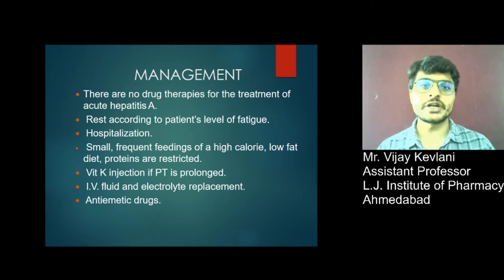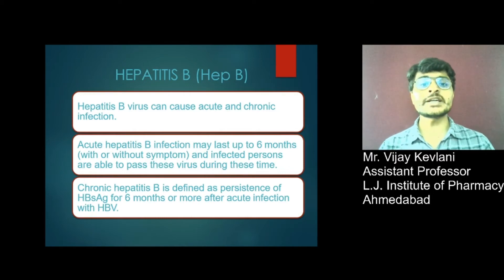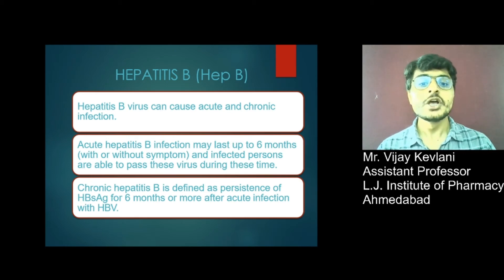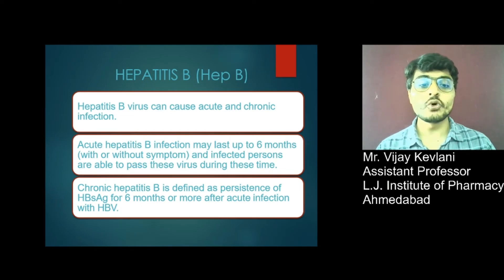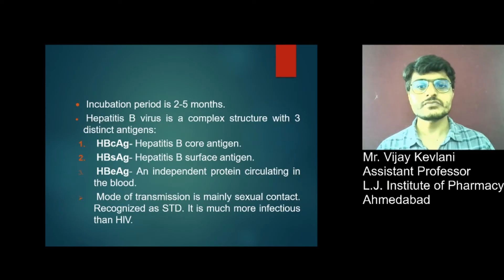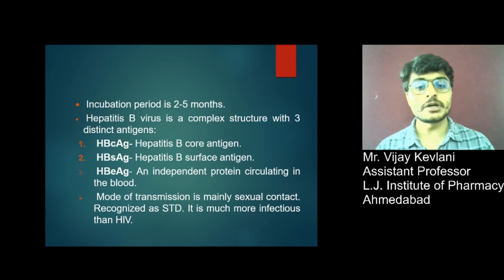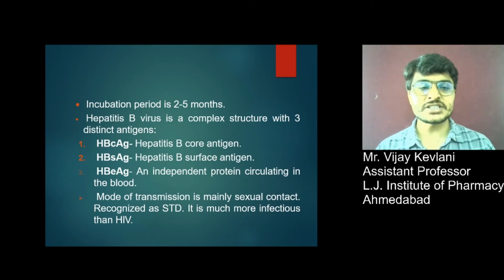Antiemetic drugs are given to prevent vomiting. Hepatitis B virus can cause both acute and chronic infection. Acute Hepatitis B infection may last up to 6 months, and infected persons are able to pass the virus during this time. Chronic Hepatitis B is defined as persistence of Hepatitis B surface antigen for 6 months or more after acute infection. The incubation period is 2 to 5 months. Hepatitis B virus has a complex structure with 3 distinct antigens: Hepatitis B core antigen, Hepatitis B surface antigen, and Hepatitis B E antigen. Mode of transmission is mainly sexual contact, recognized as a sexually transmitted disease, and it is much more infectious than HIV.